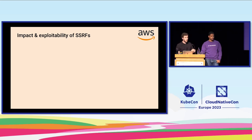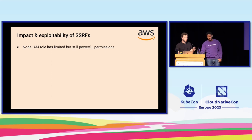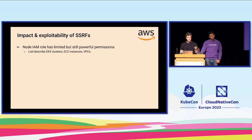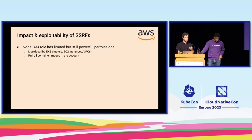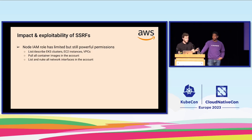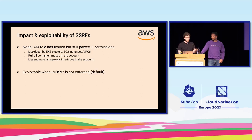In AWS, worker nodes have an IAM role which is limited but still has some privileges. Three interesting things: you can pull all container images in the account by design, but across all regions. You can describe, list, and delete all network interfaces in the account. And you can list all clusters, EC2 instances, and VPCs. So it's not terrible, but it's not great either. By default, unless you have IMDSv2 enforced, this is going to be exploitable in AWS.